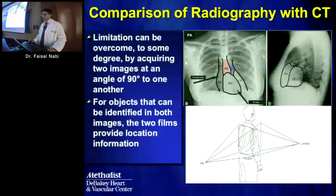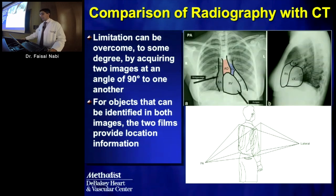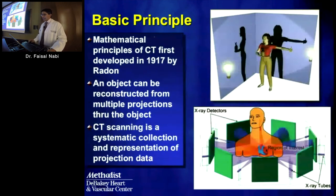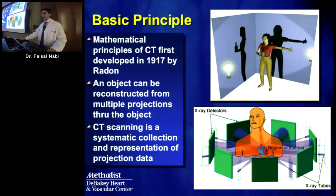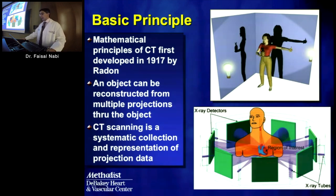One way to improve on plain radiography is to obtain both AP and lateral views, which helps differentiate and remove some overlapping structures, allowing better spatial localization. This led to the concept of CT: if two projections were better than one, what if we had multiple projections? This concept was first developed in 1917 by Dr. Radon, who won a Nobel Prize for showing that multiple projections allow systematic reconstruction of the original object.